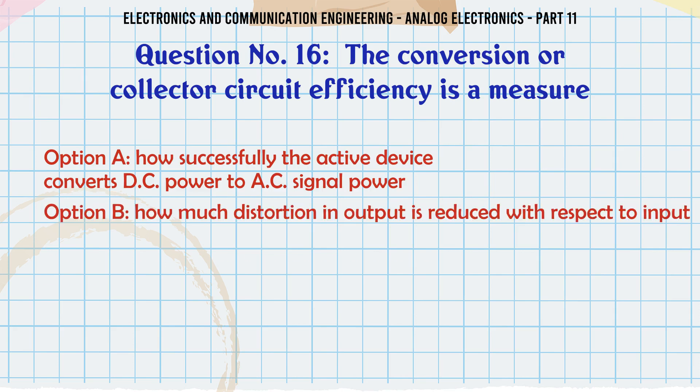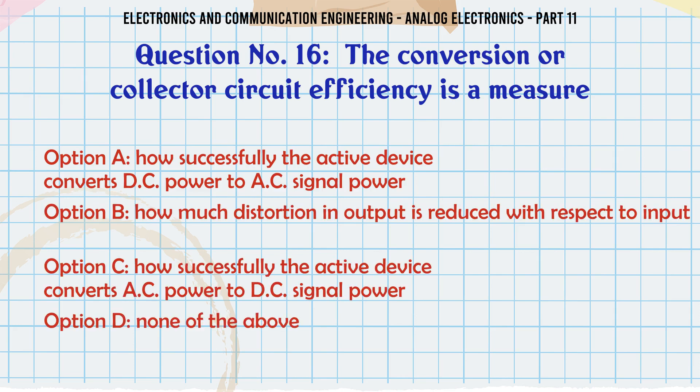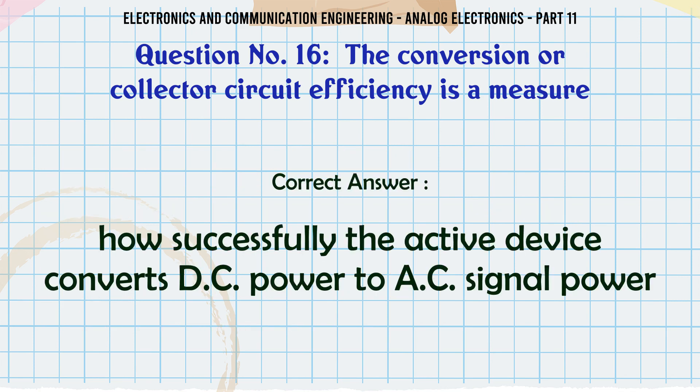The conversion or collector circuit efficiency is a measure of. A. How successfully the active device converts DC power to AC signal power. B. How much distortion in output is reduced with respect to input. C. How successfully the active device converts AC power to DC signal power. D. None of the above. The correct answer is: How successfully the active device converts DC power to AC signal power.